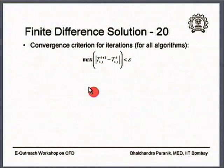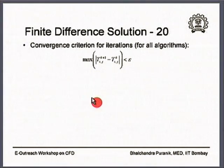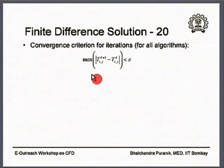Let me go back to the slide and finish up with the statement of a convergence criterion for the iterations. Whether it is Jacobi, Gauss-Seidel, or the relaxation form of those, you can implement the same criterion. Essentially you find out the maximum value of the absolute difference between the value at a grid point after the k+1th iteration and the value at the kth iteration. Find the maximum value of these in the entire domain and set it less than or equal to some epsilon, which could be 10 to the minus 3, 10 to the minus 4, 10 to the minus 5. Once this is achieved, the iteration loop breaks and your converged solution is obtained.